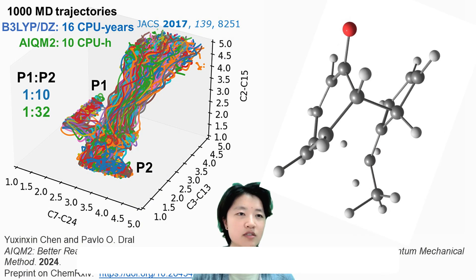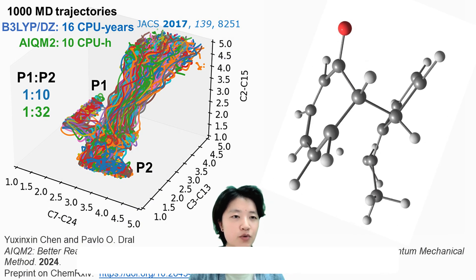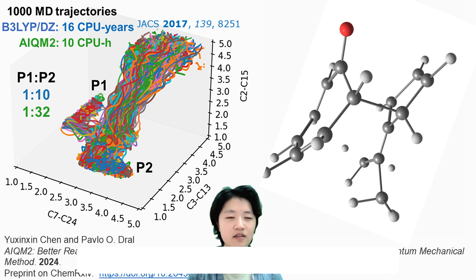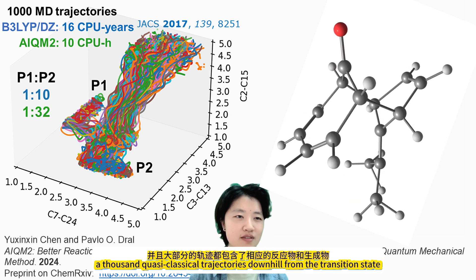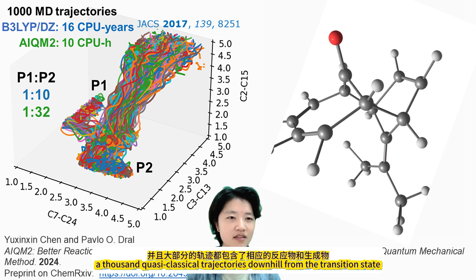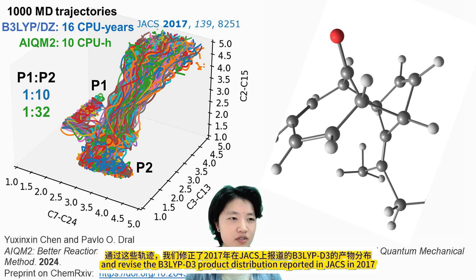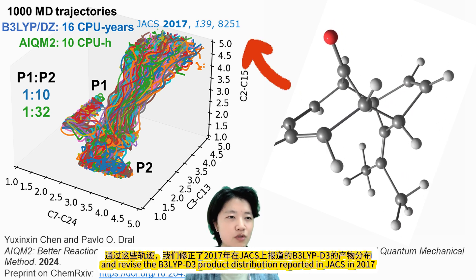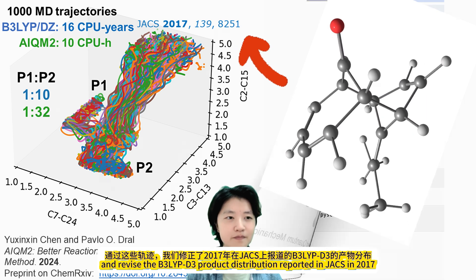The higher quality of AIQM2 allowed us to run overnight — no kidding — a thousand quasiclassical trajectories downhill from the transition state, and revised the B3LYP product distribution reported in JACS in 2017.